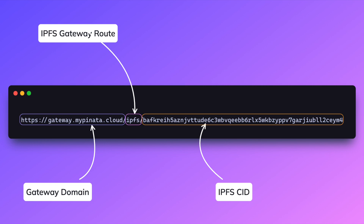So how do you use one? It's actually really simple. First you have the base domain — it could be gateway.pinata.cloud — then you have the IPFS prefix path, which is slash IPFS, and then you have the CID, which is the content that you're trying to fetch. Just those three pieces put together and you have your gateway working and running.